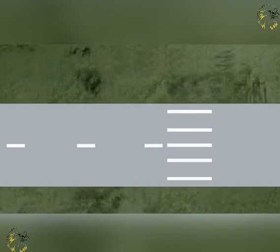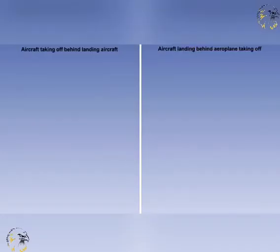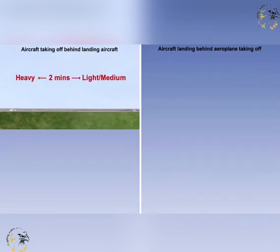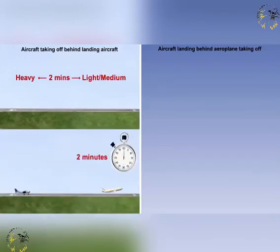The separation minima also changes on runways with displaced thresholds, which means that the start of landings is not at the very beginning of the runway but displaced further along the runway length. There are two important parts of separation with displaced thresholds. For aircraft taking off behind landing aircraft using displaced thresholds, there is a two-minute minimum separation. This applies to a light or medium aircraft taking off after a heavy aircraft has landed, and between a light aircraft taking off after a medium aircraft has landed.